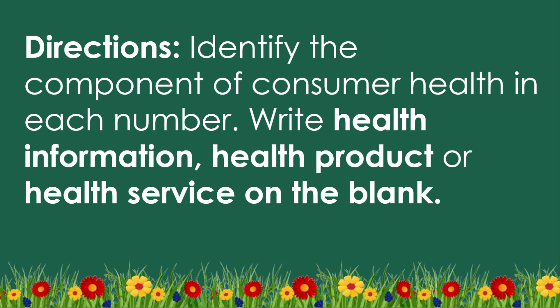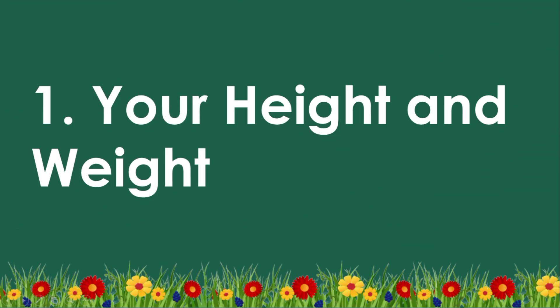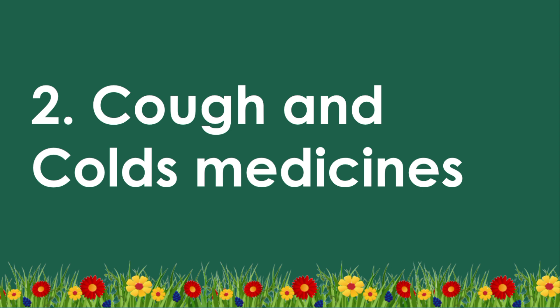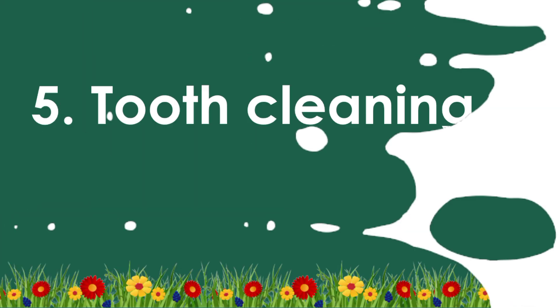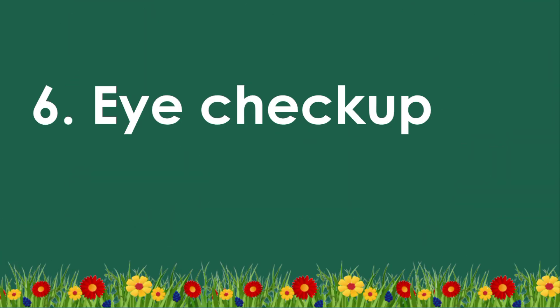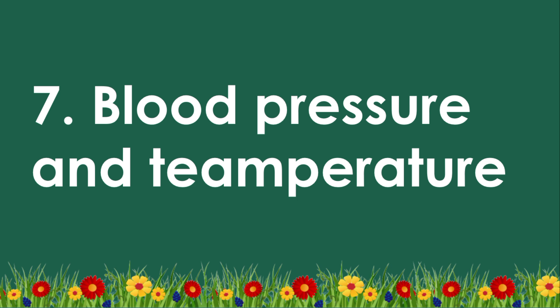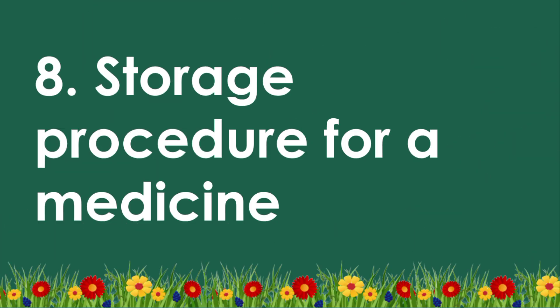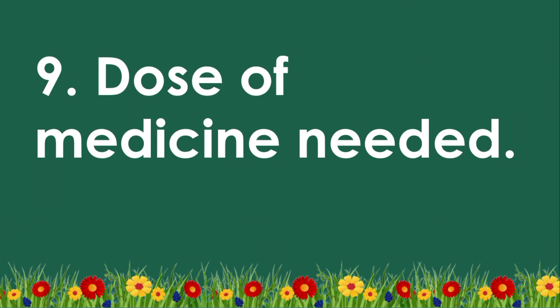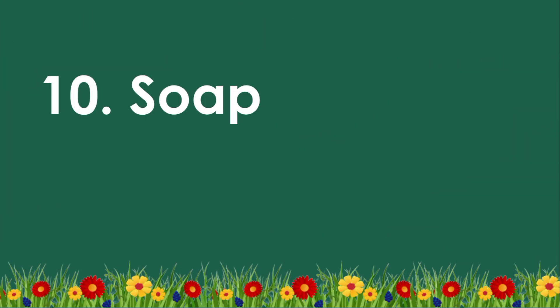Activity time. Try to answer this and comment your scores. Directions: Identify the component of consumer health in each number — write health information, health product, or health service on the blank. 1. Your height and weight. 2. Cough and colds medicines. 3. Shampoo. 4. Toothpaste. 5. Tooth cleaning. 6. Eye checkup. 7. Blood pressure and temperature. 8. Storage procedure for medicine. 9. Dose of medicine needed. 10. Soap.